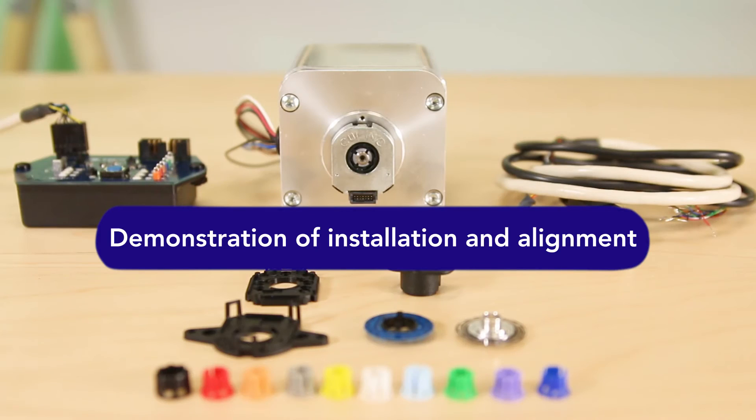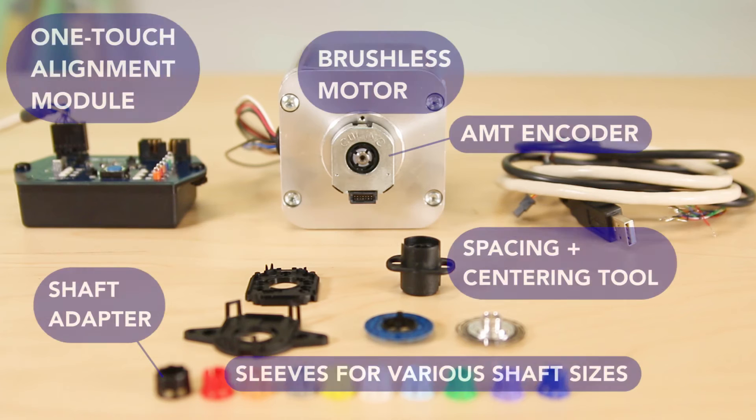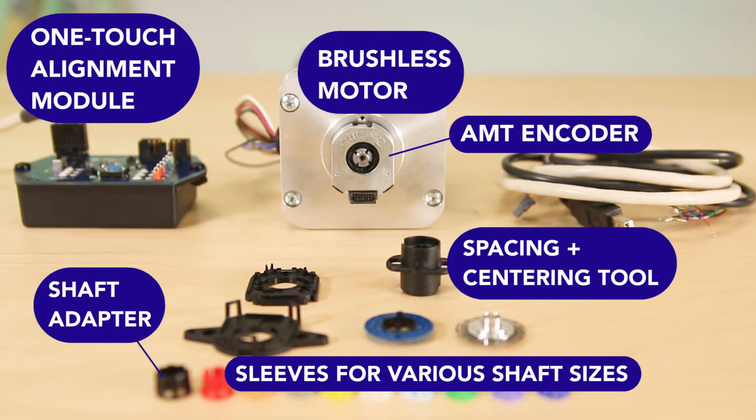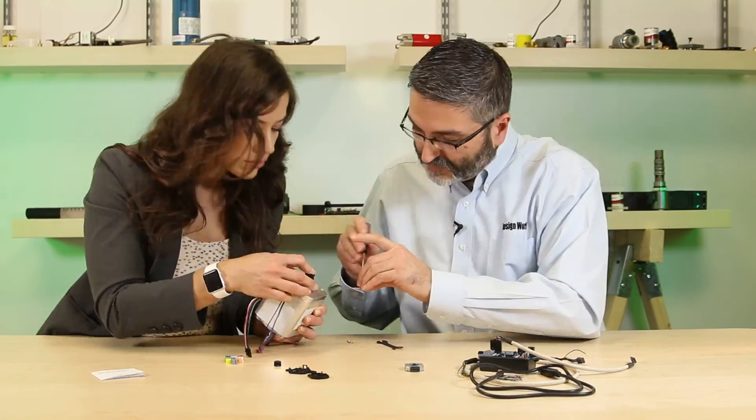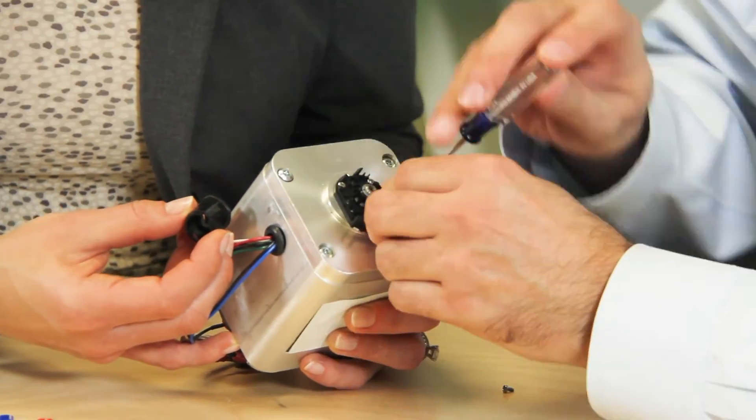Now let's review how to install and align an AMT31 commutation encoder to a brushless DC motor. First, we mount a sleeve matching the motor output shaft diameter and adapter using simple tools from CUI. Then we mount the base for the encoder to the motor housing with screws.